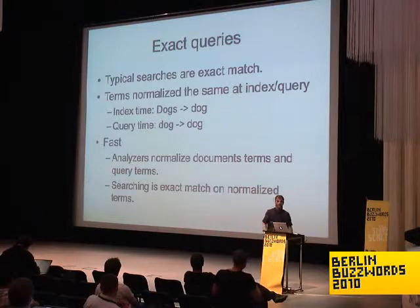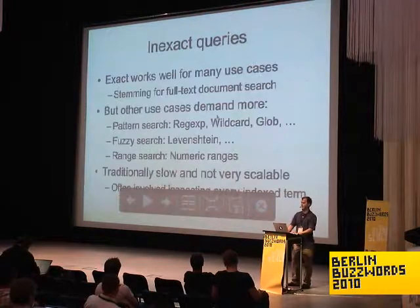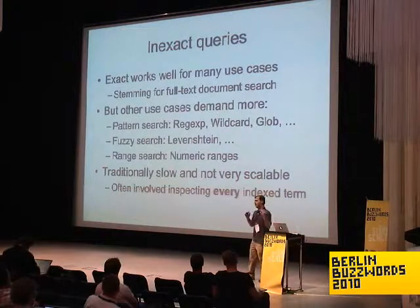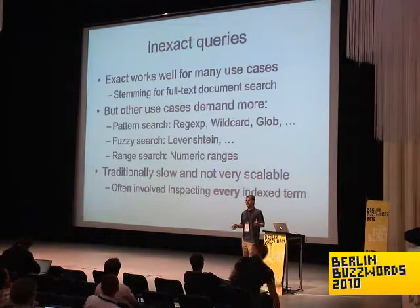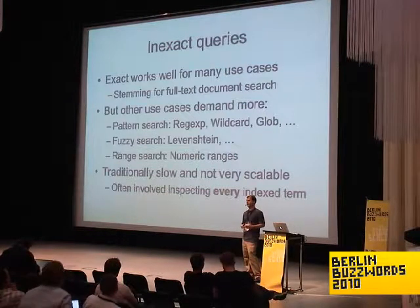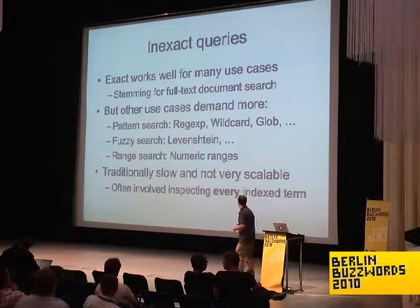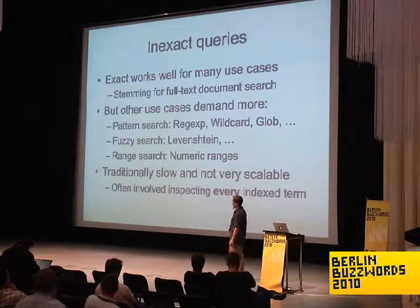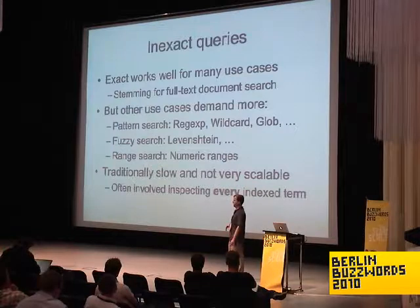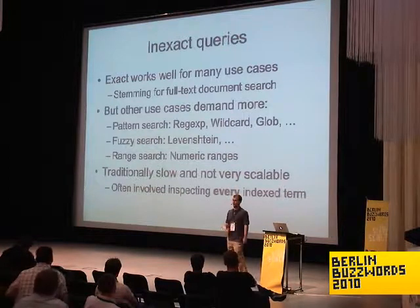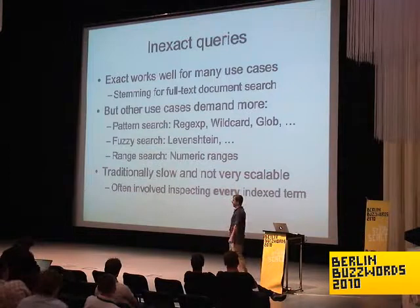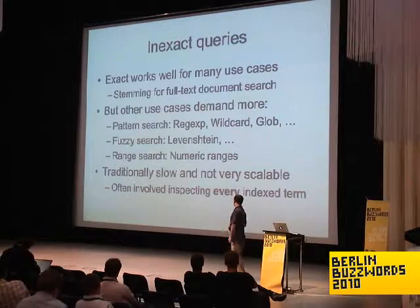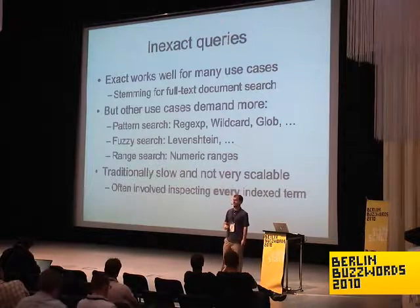This works well. It's scalable and you have no problems. But sometimes you can't up front just normalize your text to suit all your query needs. You might need to do inexact matches where at query time you want to use your index in different ways. For a lot of use cases — maybe where you're not indexing full text documents but data — you want to do things like pattern matching, fuzzy matching, or range searches. These were traditionally very slow because they would inspect every term in the index for that field.